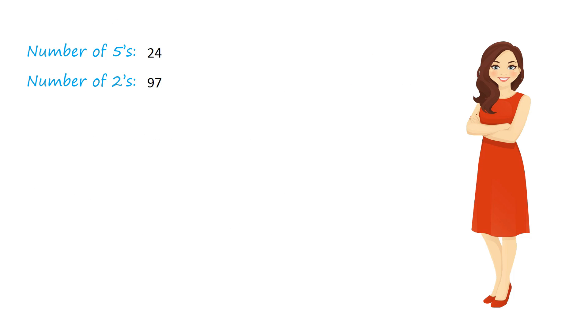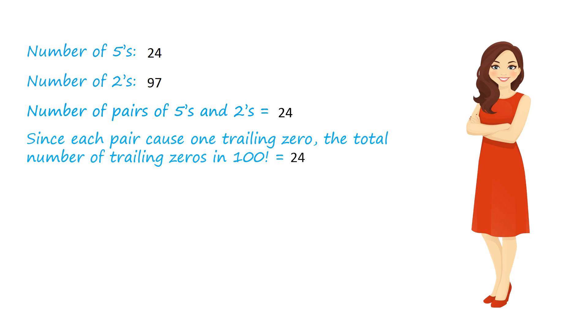So the number of 5s equals 24, and the number of 2s equals 97. This implies there are only 24 pairs of 2s and 5s. Since each pair causes one trailing zero, the total number of trailing zeros in 100 factorial equals 24.